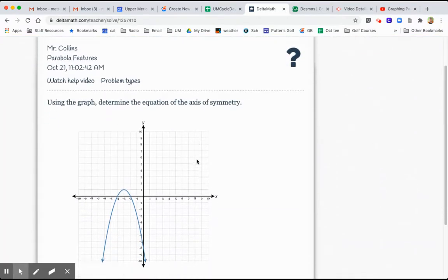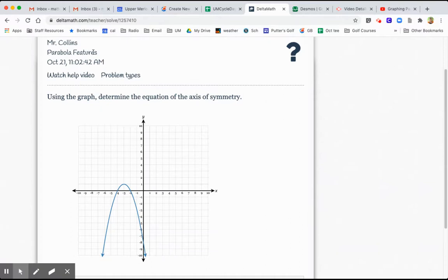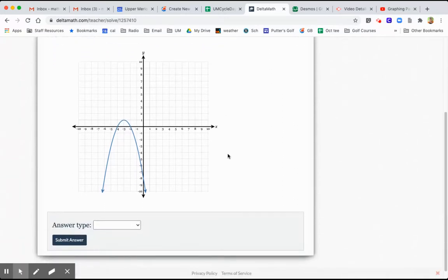Again, same topic on Delta Math. But this time they asked for the equation of the axis of symmetry. And if you think about it, the axis of symmetry is this vertical line. It's not drawn here, but I'm trying to show you using my cursor. It's a vertical line that goes right through the vertex.